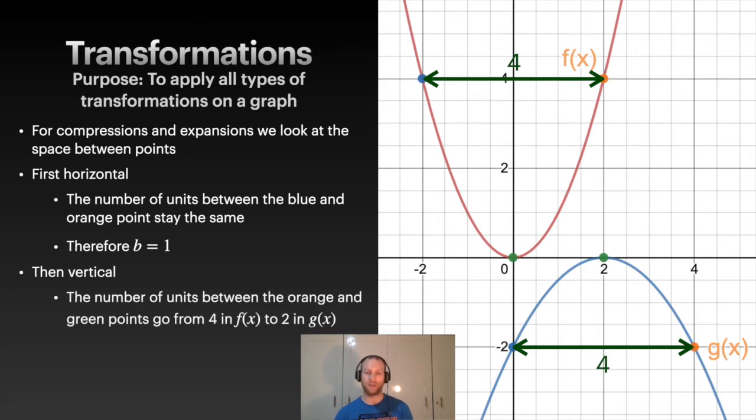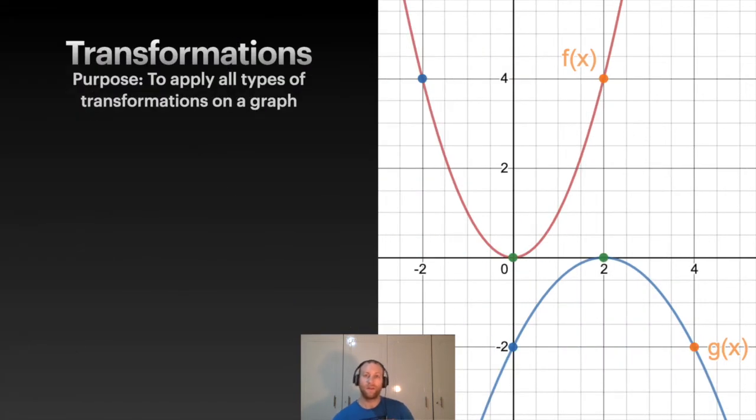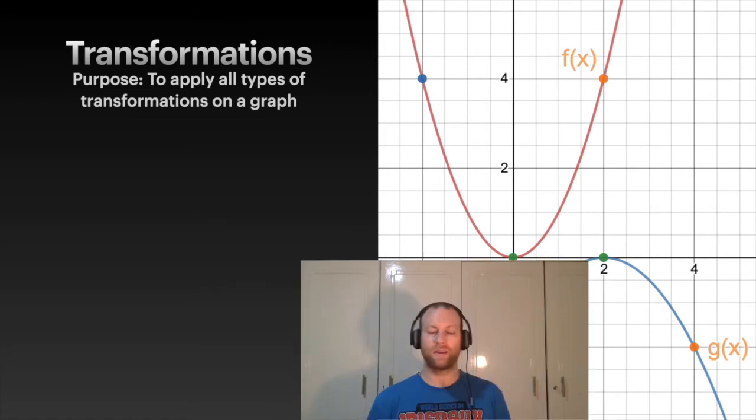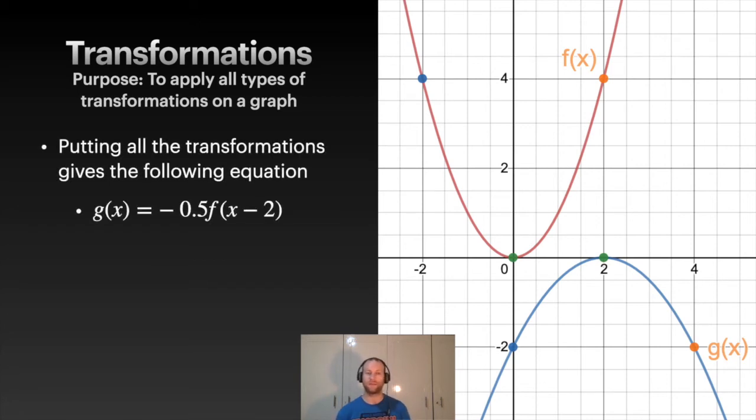Vertically, we're going to look at the orange and the green dot. Notice for f(x) we've got four units between the two of them, but on g(x) it's only two. So we went from four to two—that means we're vertically compressing by a half. And also we're going to have a reflection because it was opening up, it's now opening down. So therefore a is going to be negative a half or negative 0.5. We're just going to take those dots and put them into the equation. We took the a, took the b—there's the h and k—put them in the equation.